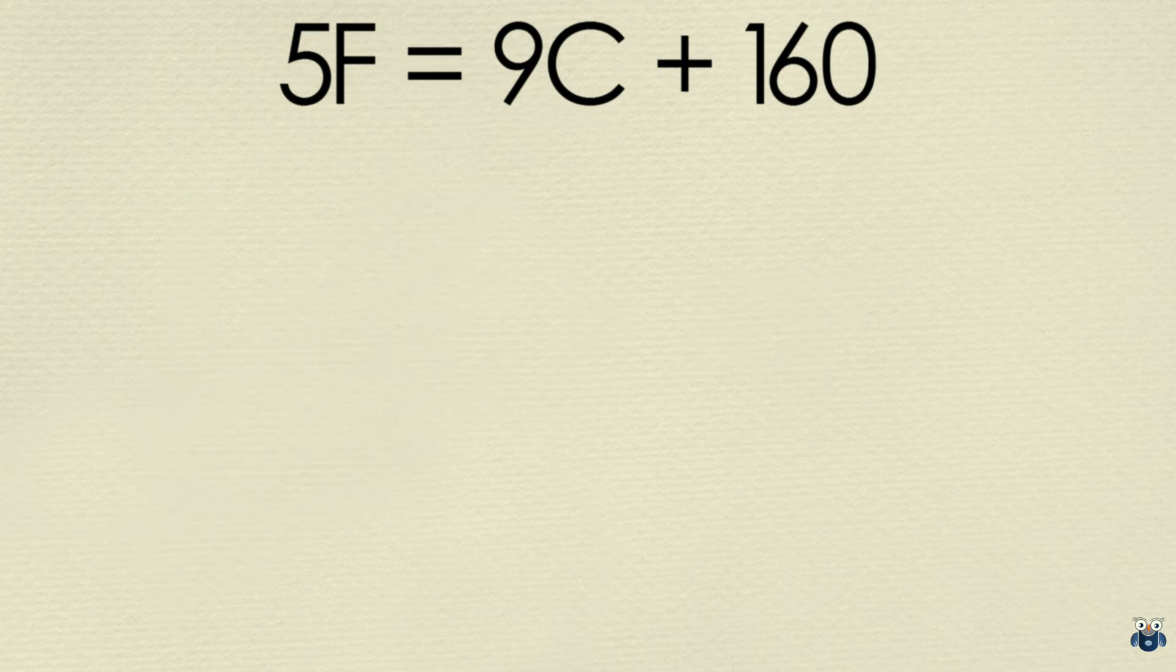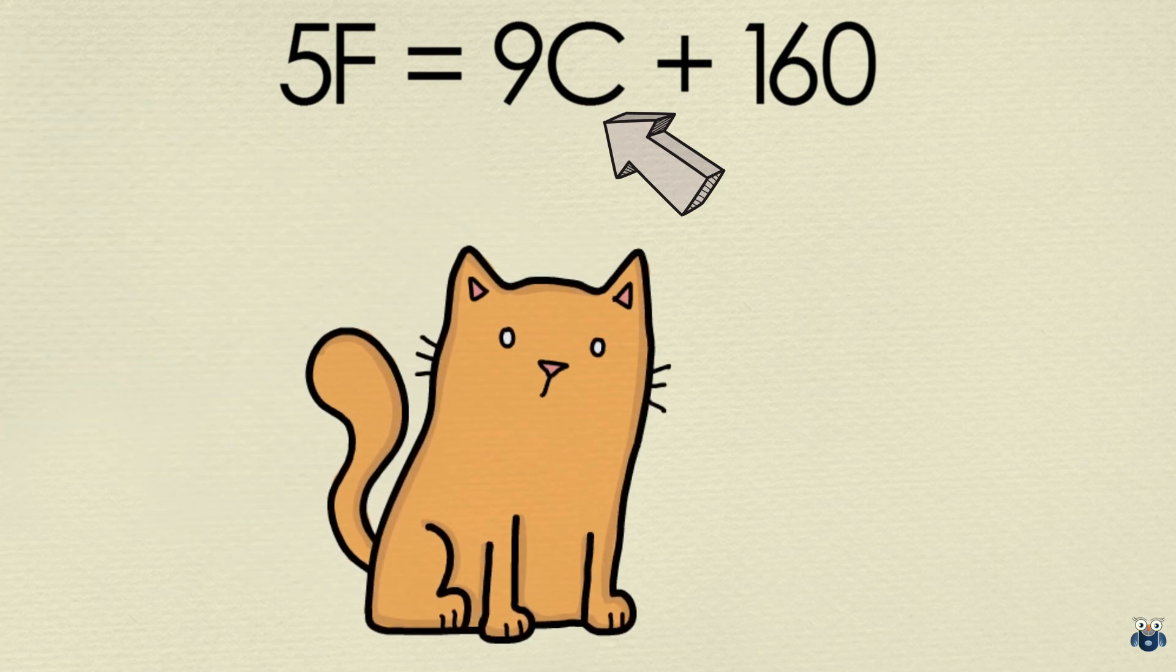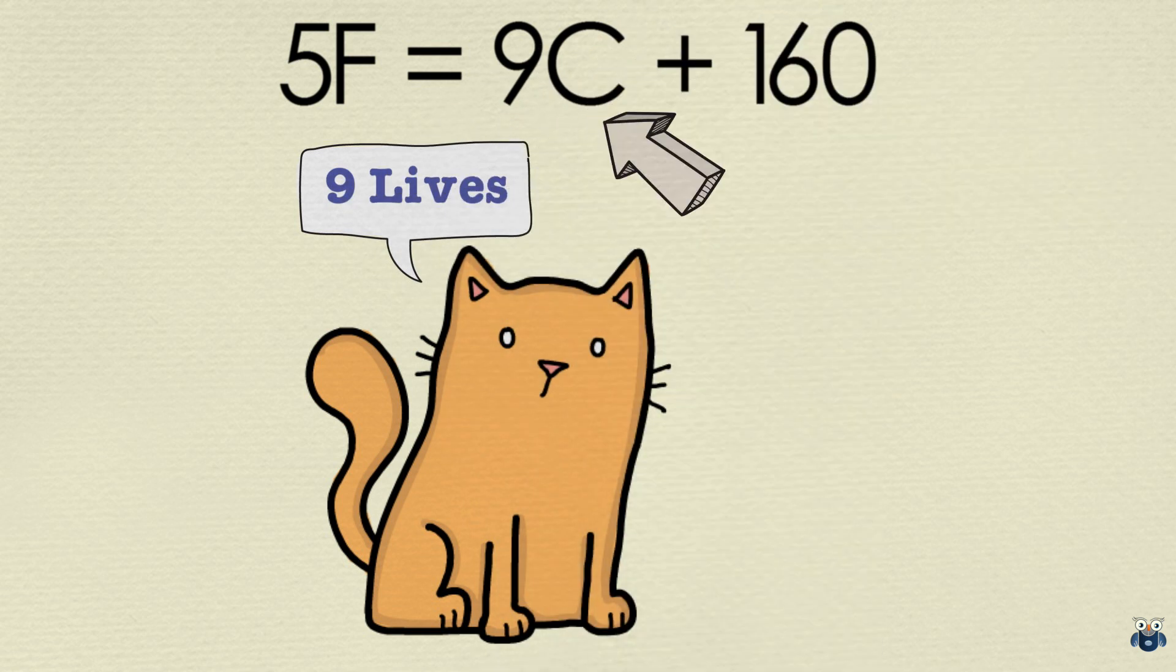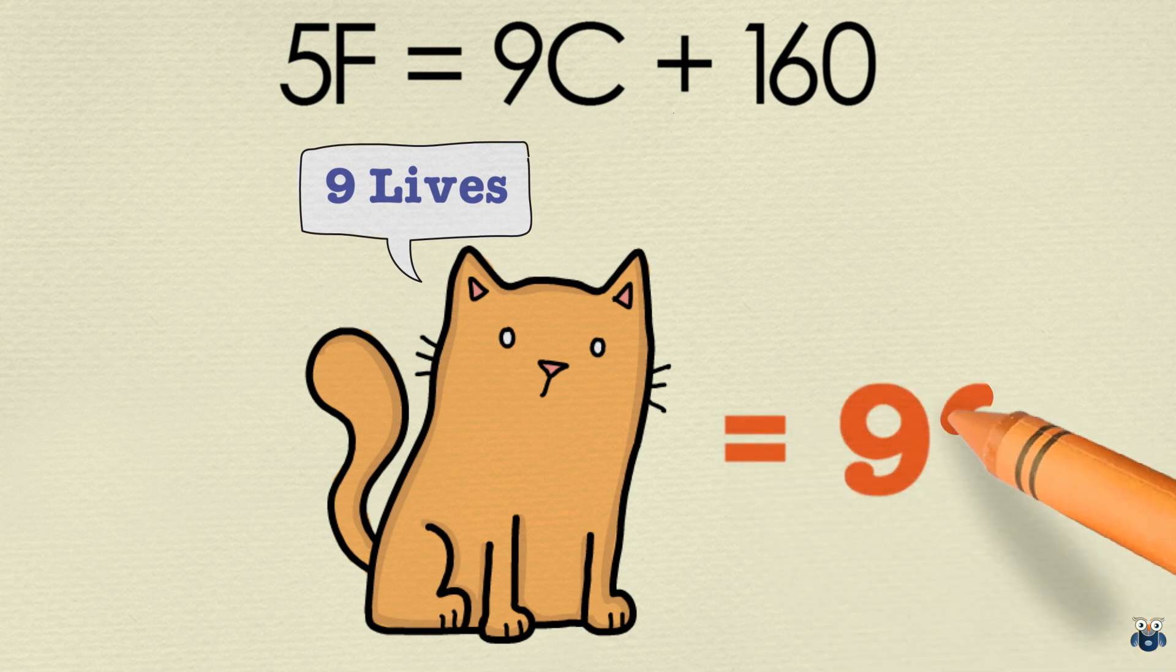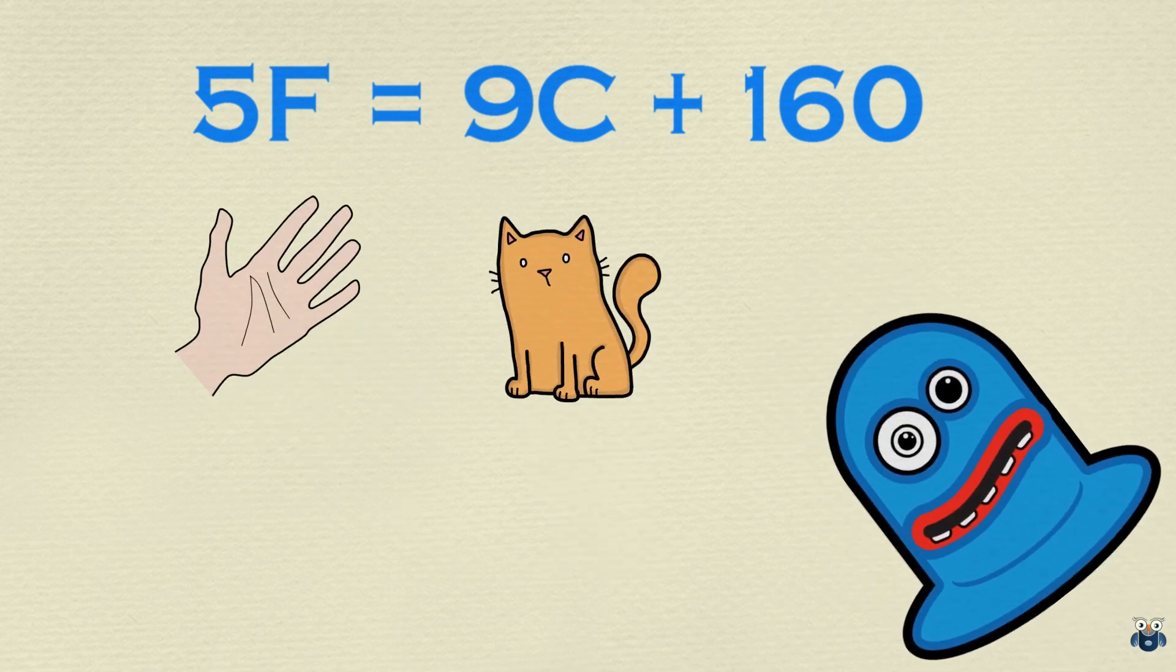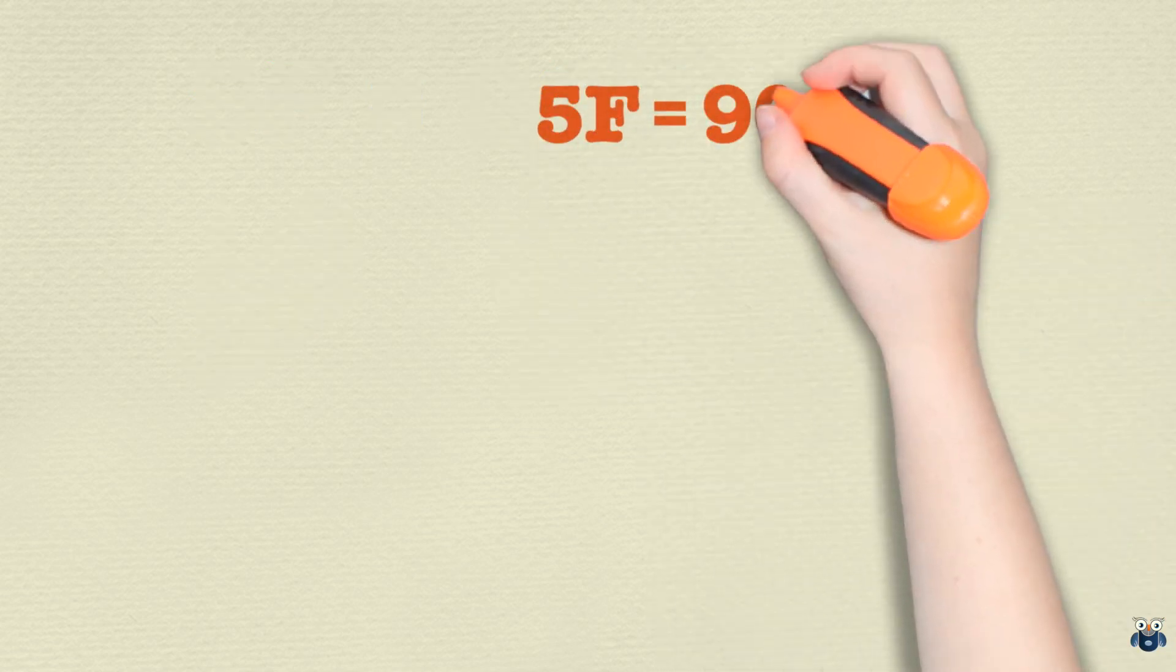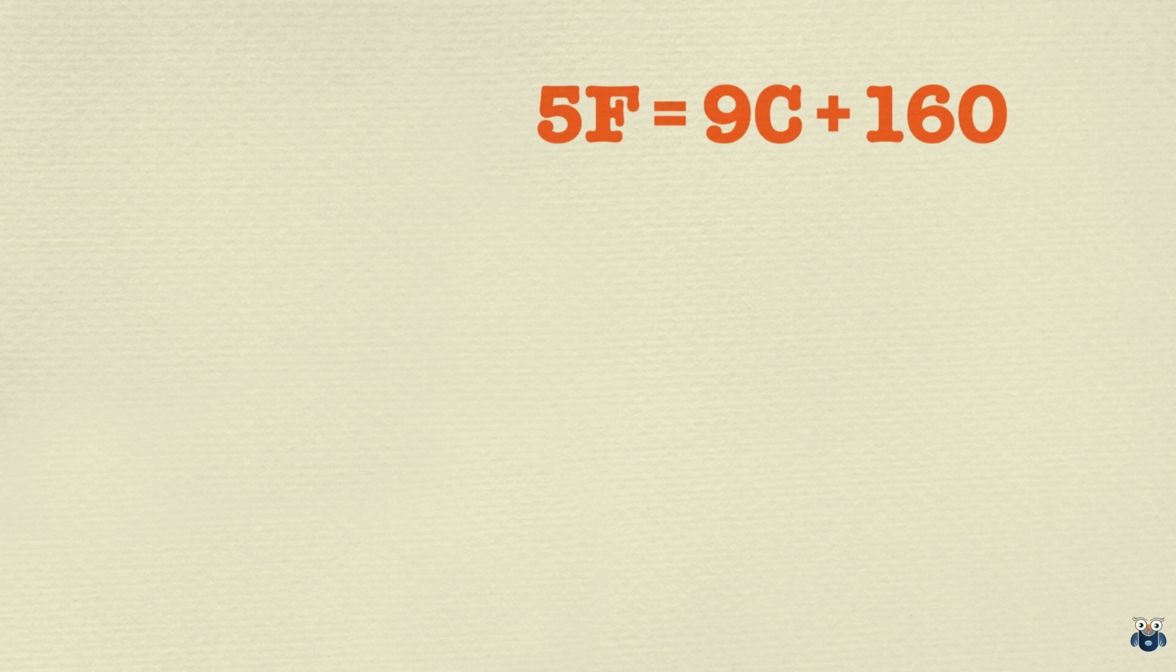Now how do we remember 9C? Okay, focus on the C and think of a cat. And there is a saying that cats have nine lives, right? So look at 9C and think of a cat having nine lives. The great thing about these images is that they will stick in your mind. You will never forget them. So let's look at our formula again: 5F equal to 9C plus 160. With the images, it is much easier to remember.